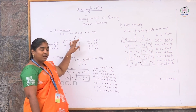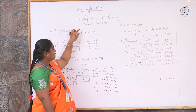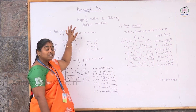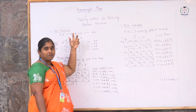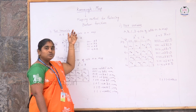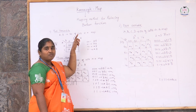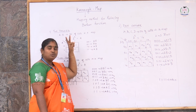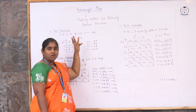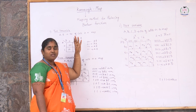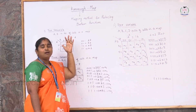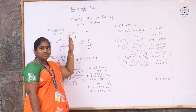Here, the Karnaugh map is nothing but a mapping method used for reducing a Boolean function of 2 variables, 3 variables, 4 variables, or 5 variables.